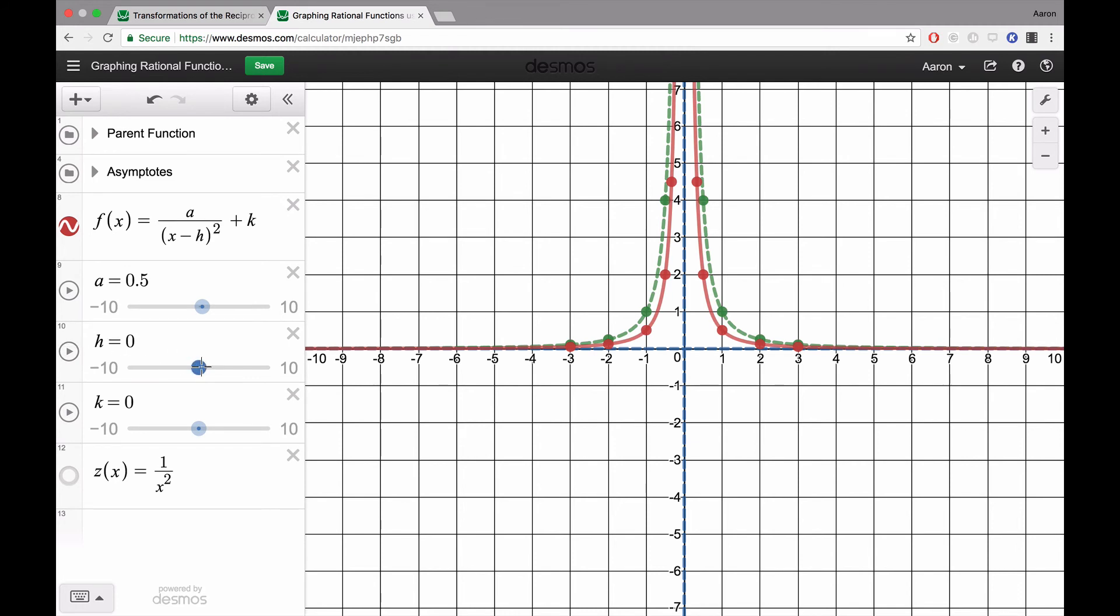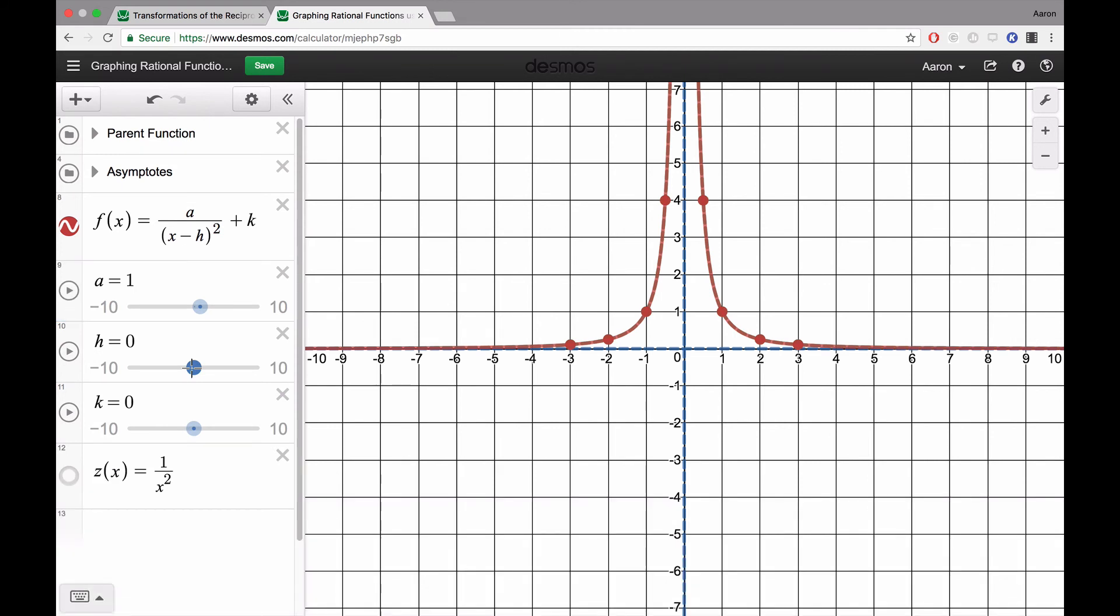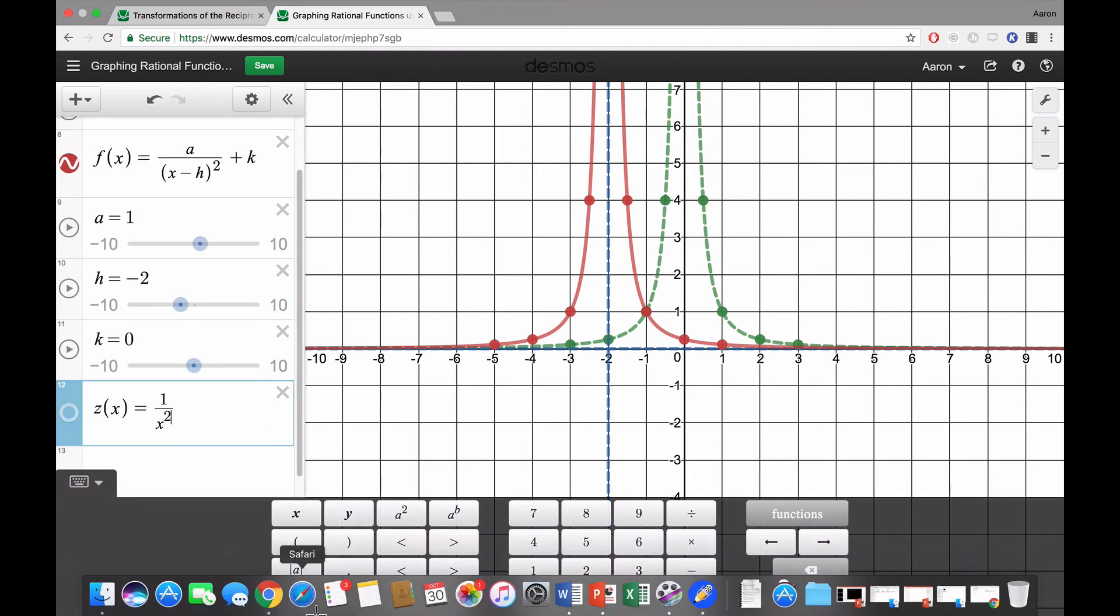For h, h is still our horizontal shift. I'm going to put this back to 1. If I want to go left 2 units, I would make h = -2, which would make my function 1/(x + 2)².